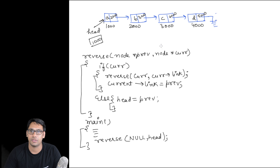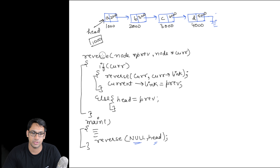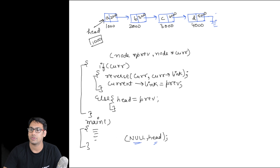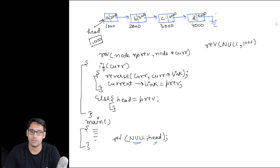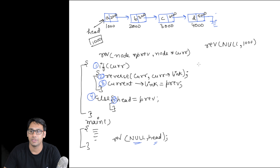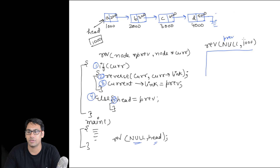In this program, when we are calling this function, initially we are passing the values null and head. So the function is 'rev'. Initially we are passing rev with null and head, where head is storing 1000. So when we call rev(null, 1000), null is stored in previous and 1000 is stored in current.